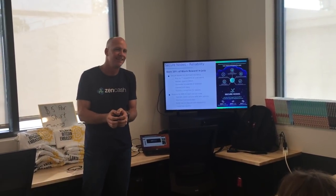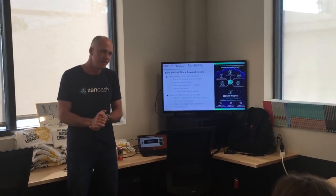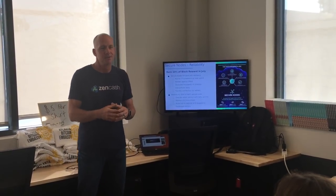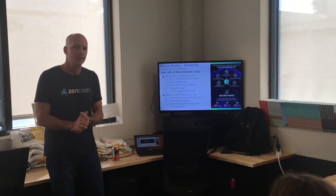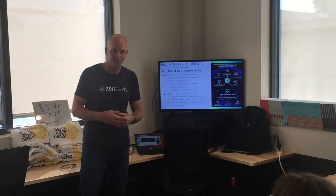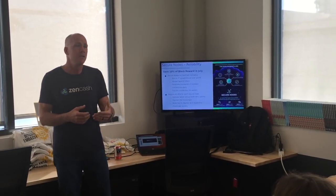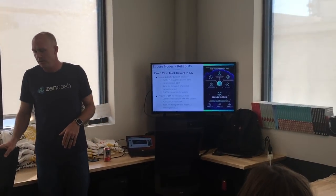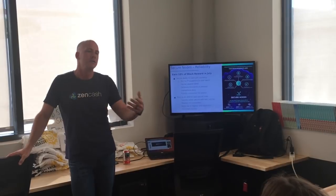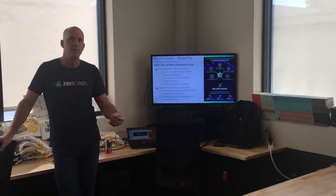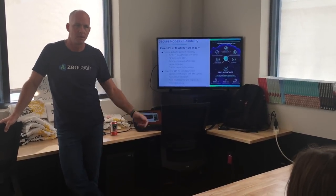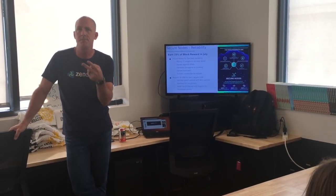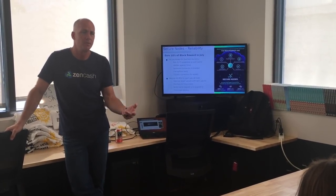There are services you can outsource node running to — people running old servers, Linux containers, running a bunch of nodes and hosting other people's nodes for them. You have to buy the ZEN and then connect it. All you need to do is keep the 42 ZEN in an address — that's the address it gets paid to — you don't hand the ZEN over to the people running the node. It requires a 64-bit operating system and about four gigs of memory. We also came up with a new class of nodes called Supernodes, which are needed to implement sidechains.